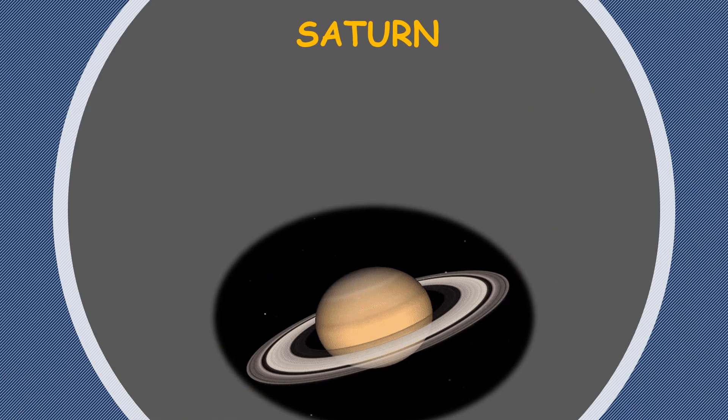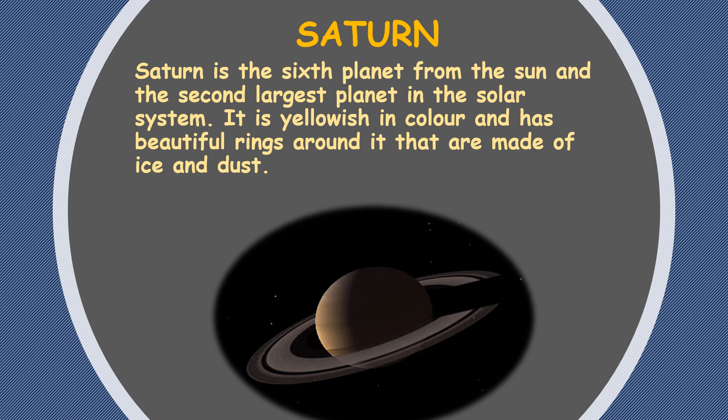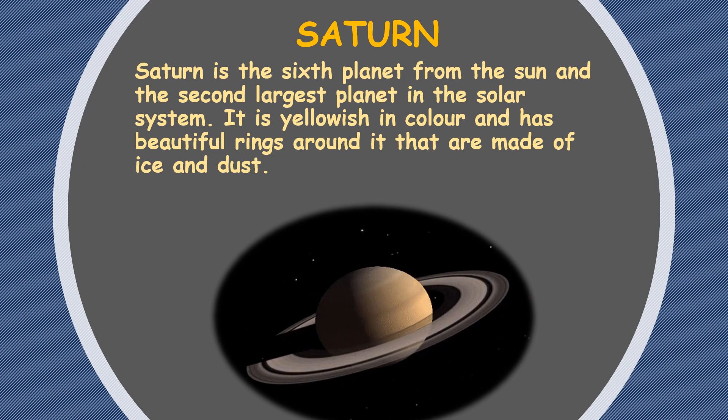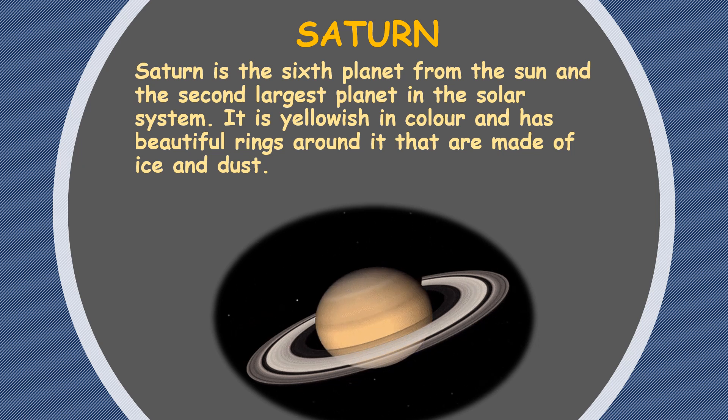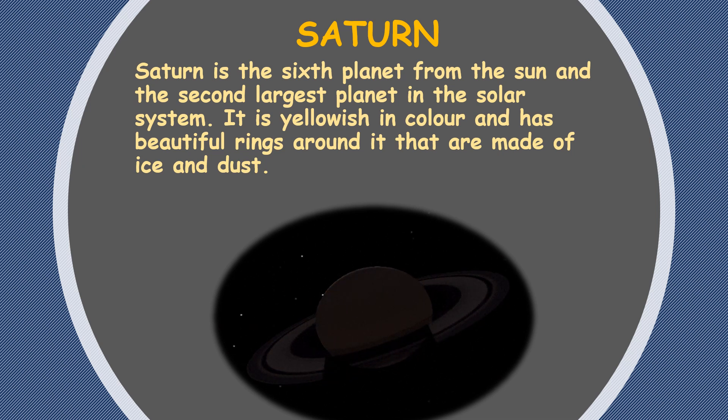Our next planet is Saturn. Saturn is the sixth planet from the Sun and the second largest planet in the Solar System. Do you remember which one is the first largest planet, children? Yes, we just saw it, right? It's Jupiter. But this is Saturn. This is the second largest planet in the Solar System. It is yellowish in color and has beautiful rings around it that are made of ice and dust.